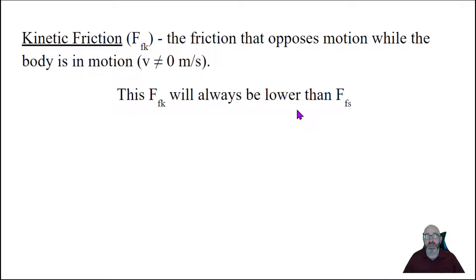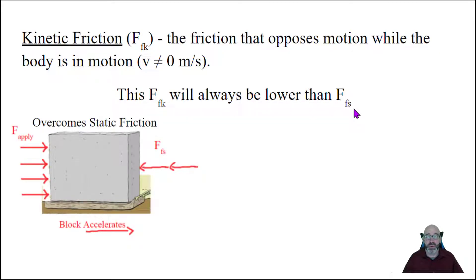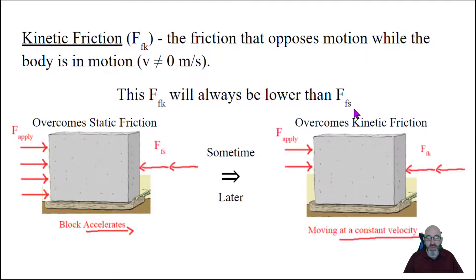The second kind of friction is called kinetic friction. And this is the friction of movement. It's known as F, FK. And it's the friction that opposes motion while the body has started moving. It has a velocity. This friction, force of friction kinetic, is always going to be lower than the force of friction static. So once the Egyptian workers started getting the block moving, it accelerates or changes its velocity. But then sometime later, they don't need as many workers to keep that block going once it's started.